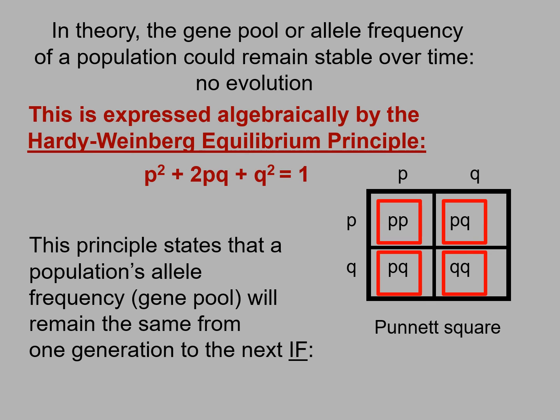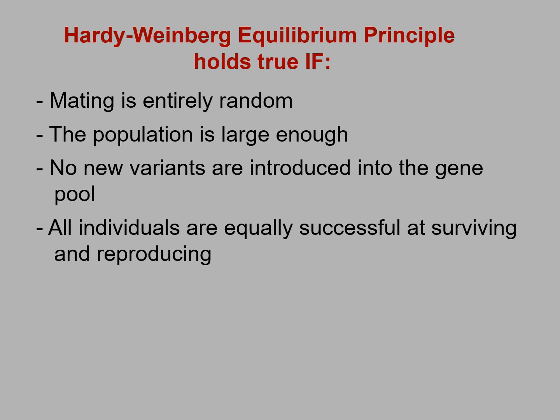The Hardy-Weinberg equilibrium principle states that a population's allele frequency — that is their gene pool — will remain the same from one generation to the next if four conditions are met: mating is entirely random, the population is large enough, no new variants are introduced into the gene pool, and all individuals are equally successful at surviving and reproducing. If all four of these conditions are met, then the allele frequency in the population will not change through time and evolution will not occur.